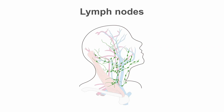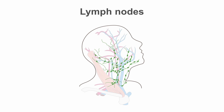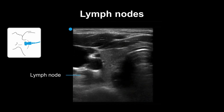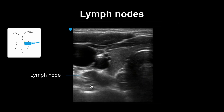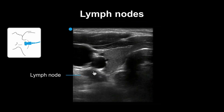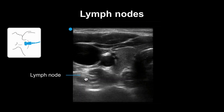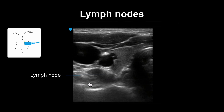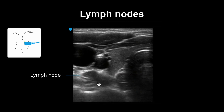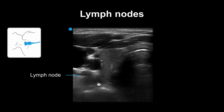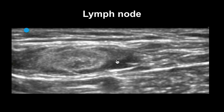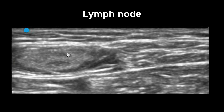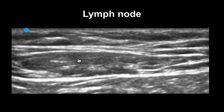There are also several chains of lymph nodes in the neck that you may encounter. Lymph nodes are rounded heterogeneous structures that are blind ending — here you can see one behind the left IJ. Here is another example of a lymph node: rounded and blind ending.